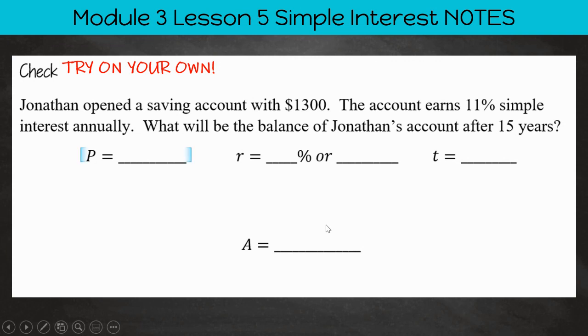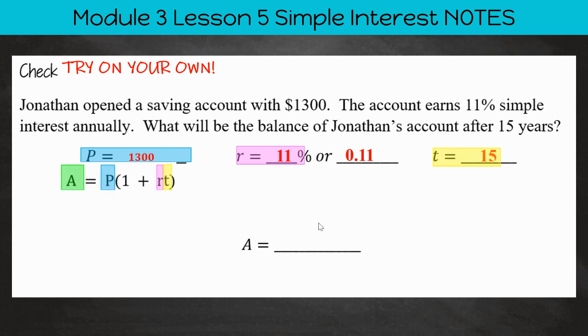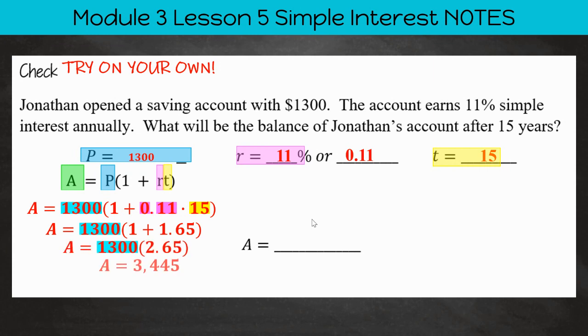Now you've gone ahead and tried that on your own. We're going to fill in what we know. Our principal amount is $1,300. Our rate is 11%, or 0.11. And our T is 15 years. So there is our formula. A equals P multiplied by 1 plus our T. And now we're going to plug in our values. And once we do that, we find that our account is going to be worth $3,445 after 15 years of being invested.